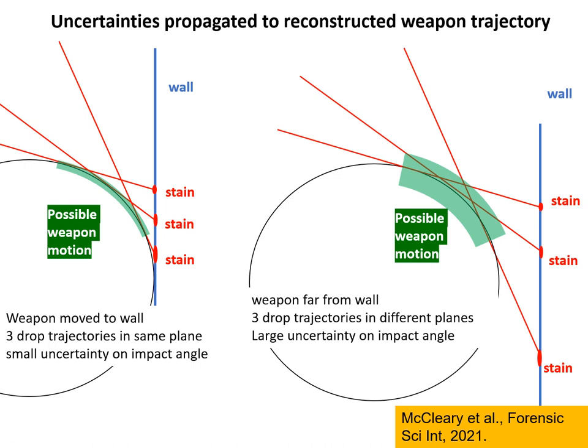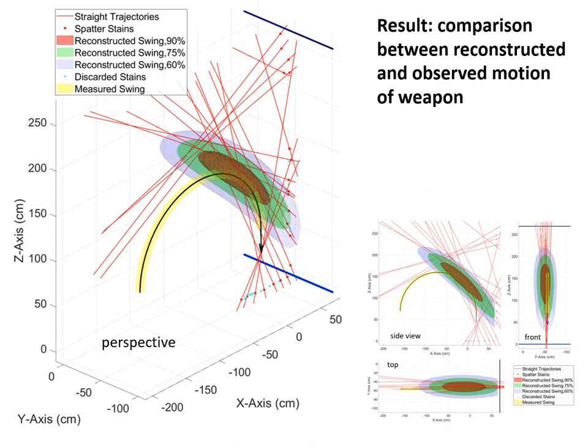Here's an example of how uncertainty is propagated. If you have stains that are very well-defined and the circle is close to the wall, and the drop trajectories are in the same plane, then you get a very narrow region in space where the weapon possibly moves. But if you are far from the wall, drop trajectories are not exactly in the same plane, and you have large uncertainties on the impact angle determination — for example, if you have sand on your wall — then the possible weapon motion covers a much larger amount of space. That's how we propagate the uncertainty. We then put together all possible regions using a statistical approach, computing the most likely region where the weapon was moving.